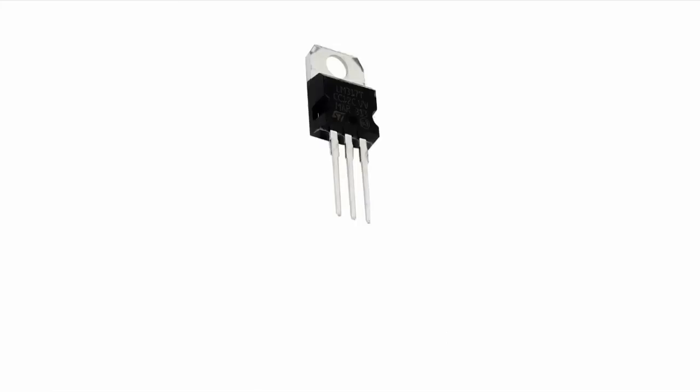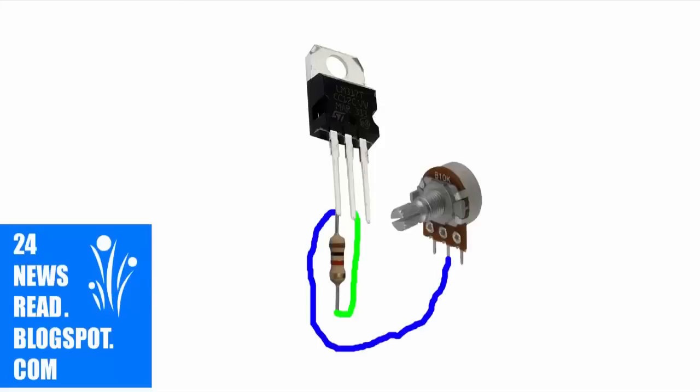First we set our IC. The resistor connects to pins 1 and 2 of the IC. Now set the potentiometer: pin 2 of the potentiometer connects to pin 1 of the IC.